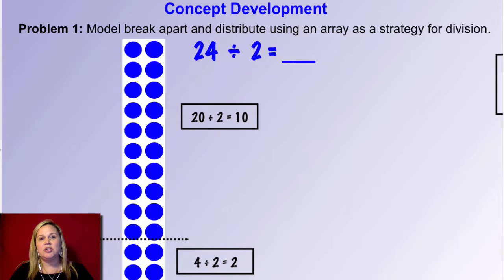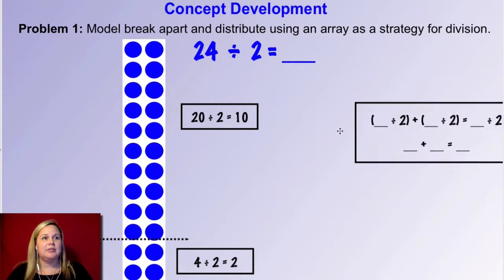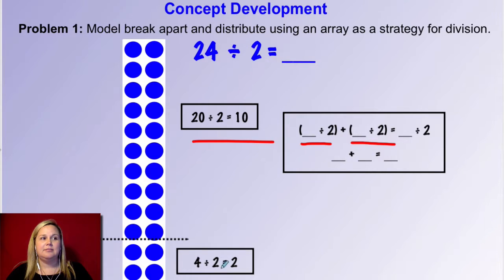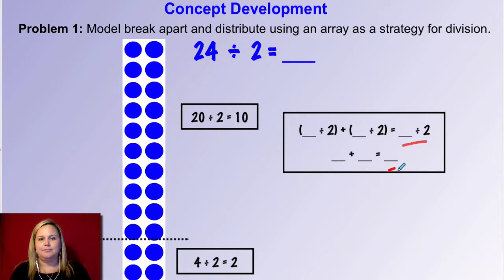So now what we're going to do is rewrite this as an addition of two quotients. A quotient is just the answer of a division problem. We're going to take two division problems, find each answer, and add those together to find our overall answer. I'd like for you to copy this onto your dry erase board and figure out what goes in the blank. Notice there are two parts to our array, and you can already use what you've already done to fill in the blanks, then solve each part and write the answers. Click pause, fill in the information, then click play when you're ready to go over it together.